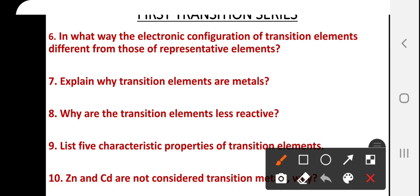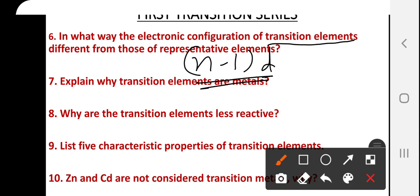In representative elements, only the outermost shell is incomplete. While in case of transition elements, the last but one shell is also incomplete. Because in transition elements, electrons enter the anti-penultimate shell — the penultimate shell, that is the (n−1)d series. Whereas in representative elements, electrons enter the outermost shell, that is ns or np. That is the first basic difference.